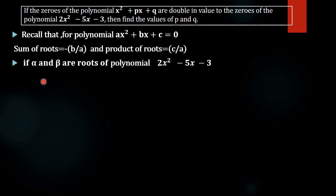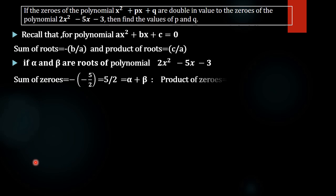Using that, if alpha and beta are the roots of 2x² - 5x - 3, then alpha plus beta equals minus b by a, that is minus of (-5) by 2, which equals 5 by 2. Then product of roots equals c by a, that is minus 3 by 2.